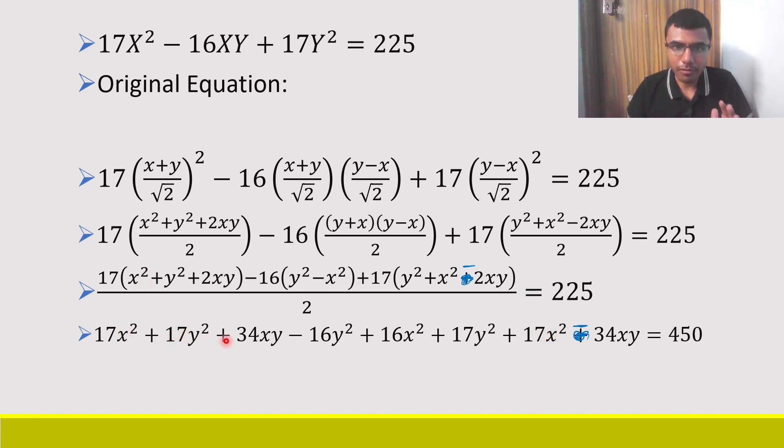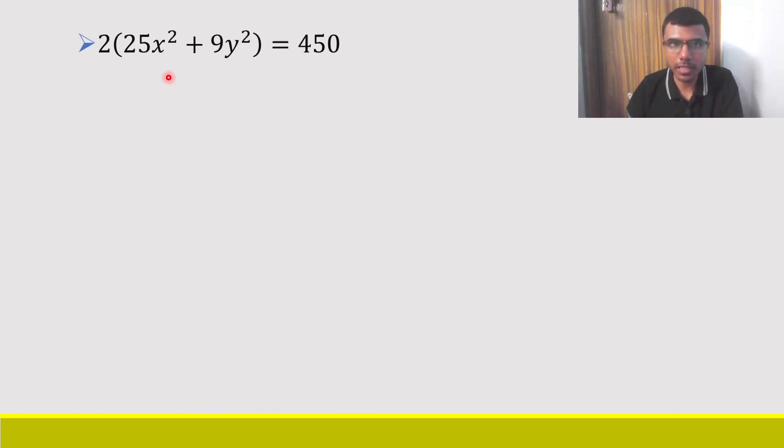17y² - 16y² is 1y², y² + 17y² is 18y². So I have 50x² + 18y² = 450. Just take two common and send the two here. Ultimately I am left with this: 25x² + 9y² = 225. This is my original equation. That's it.